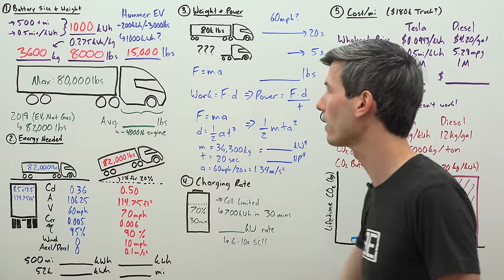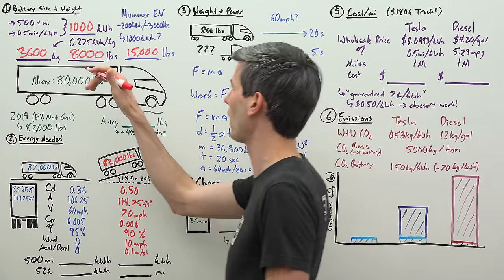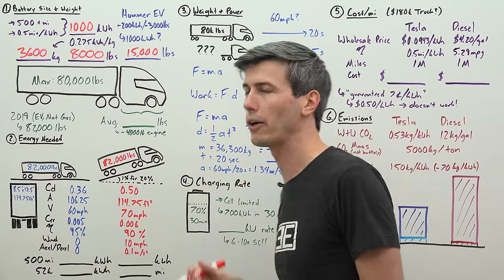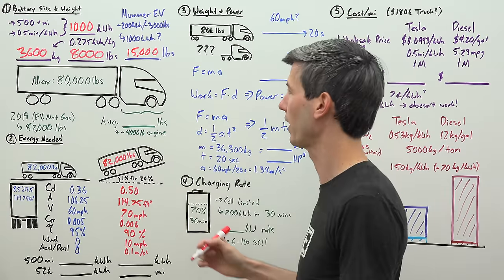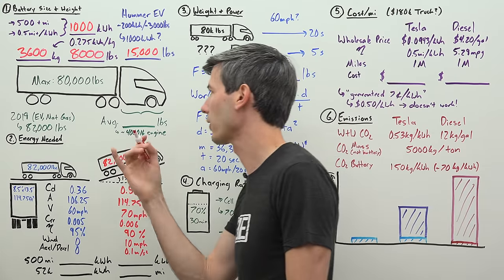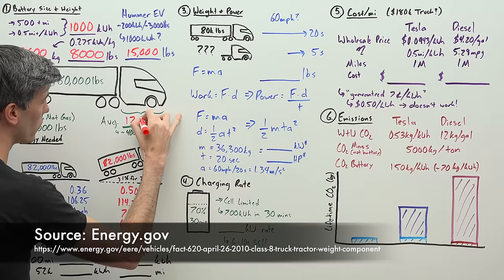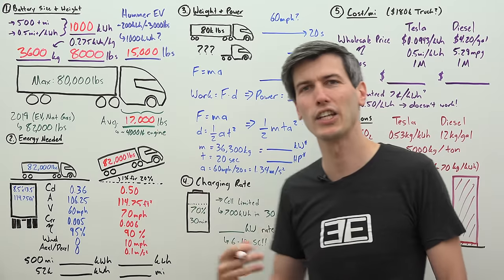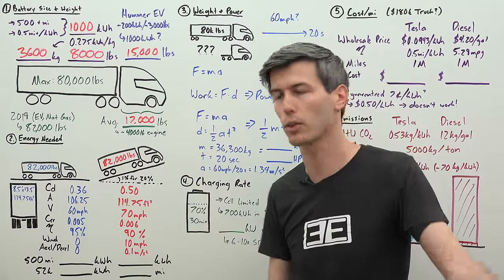Tesla's definitely going to be under that, and they're definitely going to be over 8,000 pounds unless they have some magic chemistry. So I believe it'll be somewhere between these two, probably around 10 to 12,000 pounds for the battery. Now that's a lot, but it's not crazy. The average class 8 semi truck weighs about 17,000 pounds, and about 4,000 pounds can be attributed to the engine and related components.